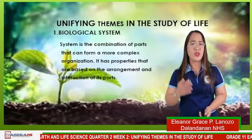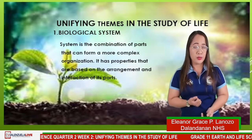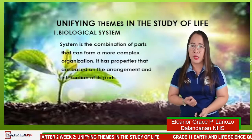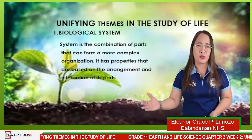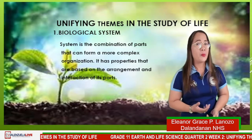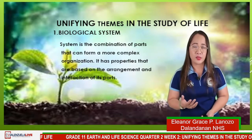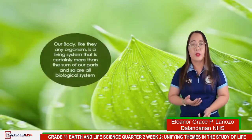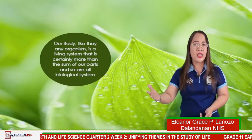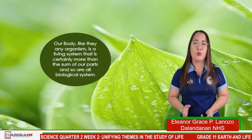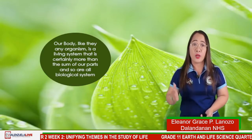So first, we have the 10 unifying themes in the study of life. The first one is the biological system. A system is a combination of parts that can form a more complex organization. It has properties based on the arrangement and interaction of its parts. Our body, like any organism, is a living system that is certainly more than the sum of all its parts — and so are all biological systems.